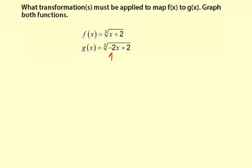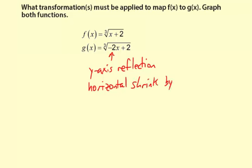Now multiplying the input variable x by negative 2, that does two things. It is a y-axis reflection. And it's also a horizontal shrink by 1 half. And those are the only changes to the function f of x to make g of x.